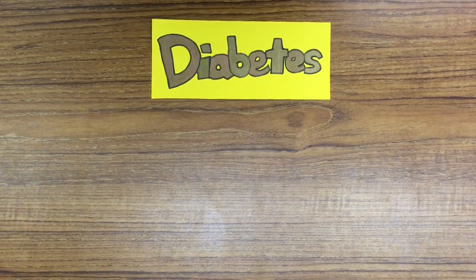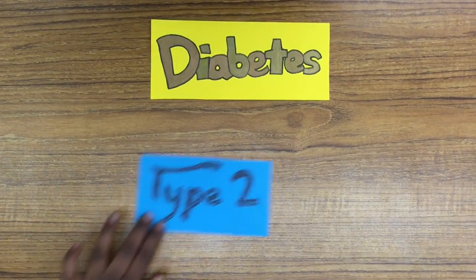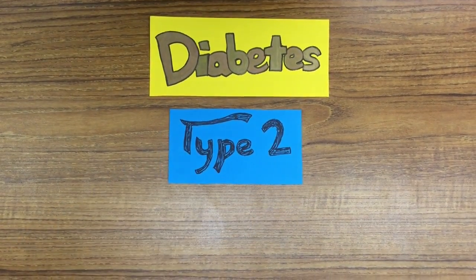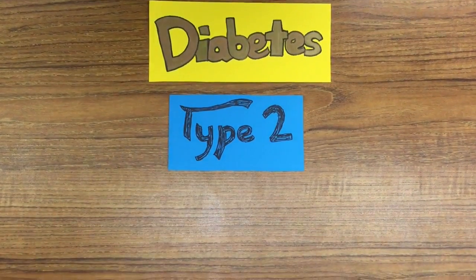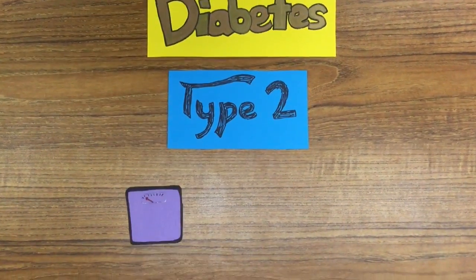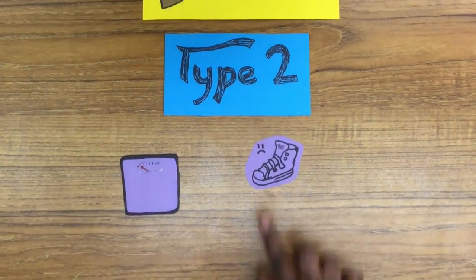Type 2 diabetes can be hereditary, but it can also develop when a person is overweight or not exercising regularly.